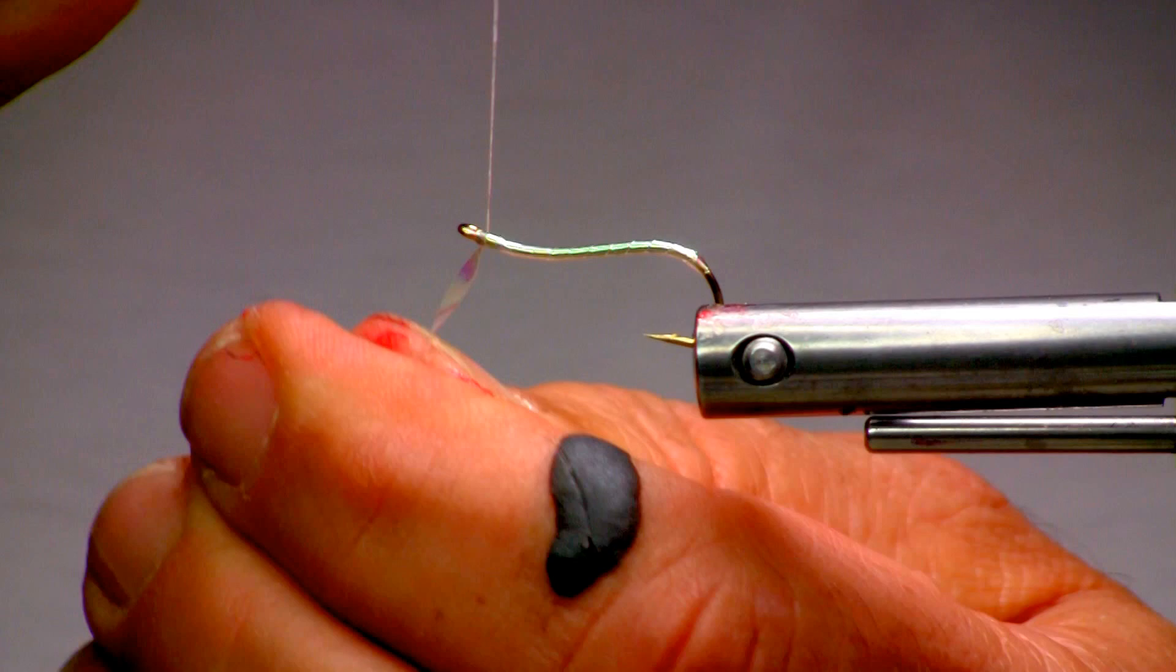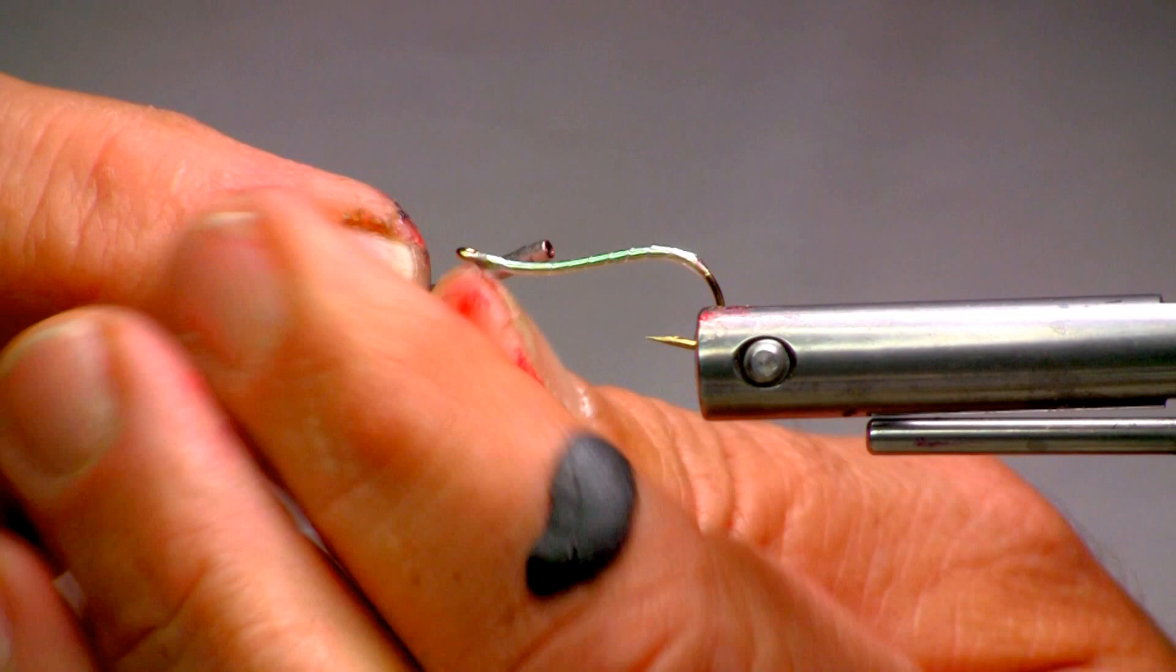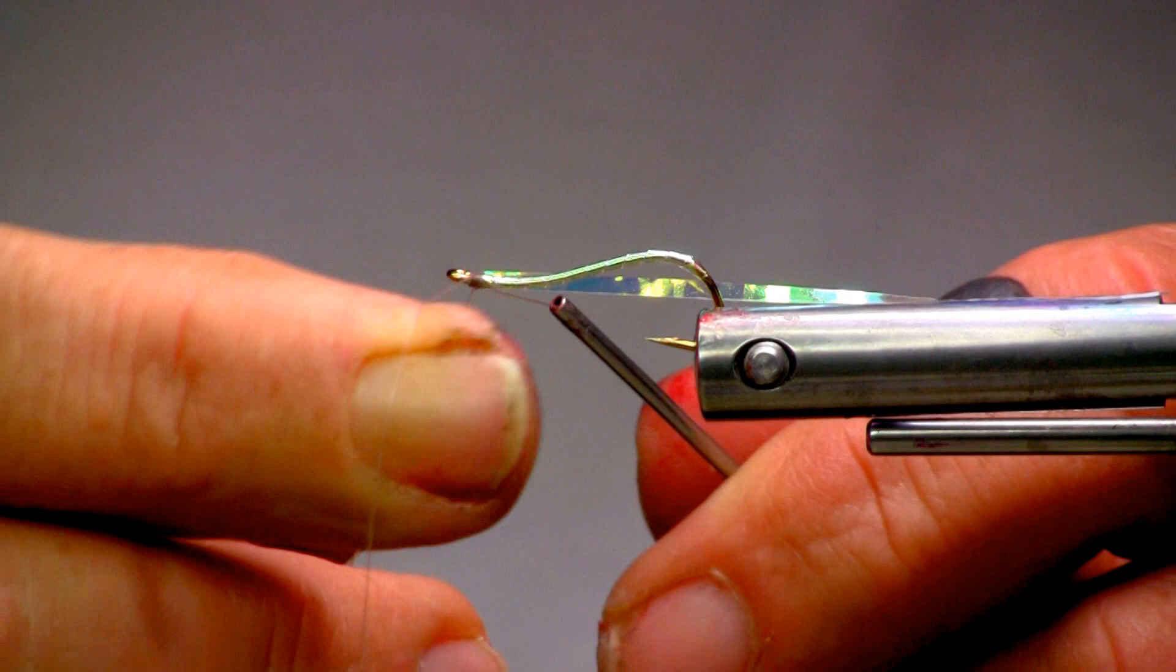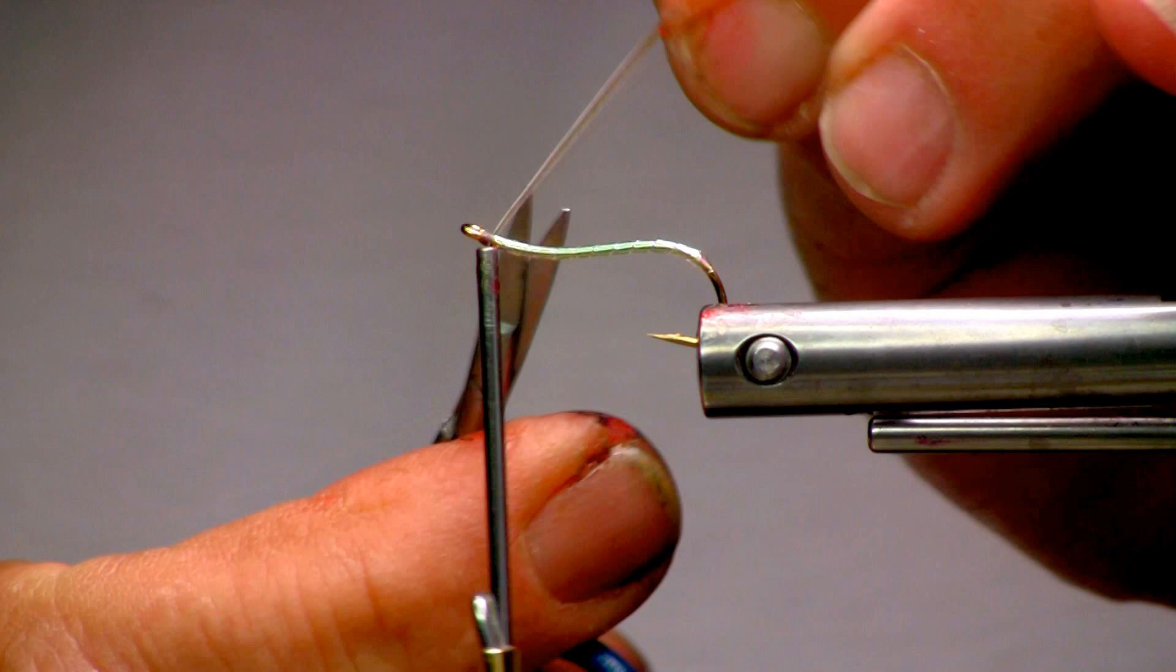Here, to tie off, I'll do one wrap over top of the material, one in front, one over top, one in front, do that three times, secure that, throw in a half hitch, and then cut away the excess.